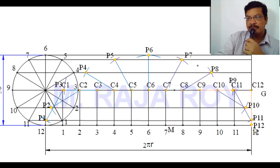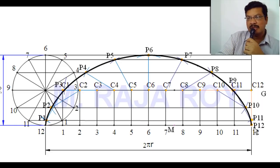Now, joining P1, P2, P3, and so on through P12, draw a smooth curve. This is the required cycloid.